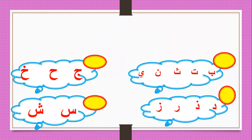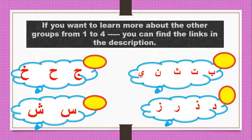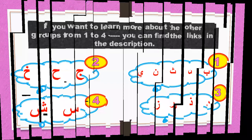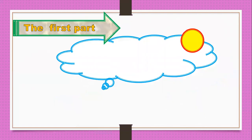If you want to learn more about the other groups from one to four, you can find the links in the description. Let's go to the first part: the fifth group in the similar letters in writing.